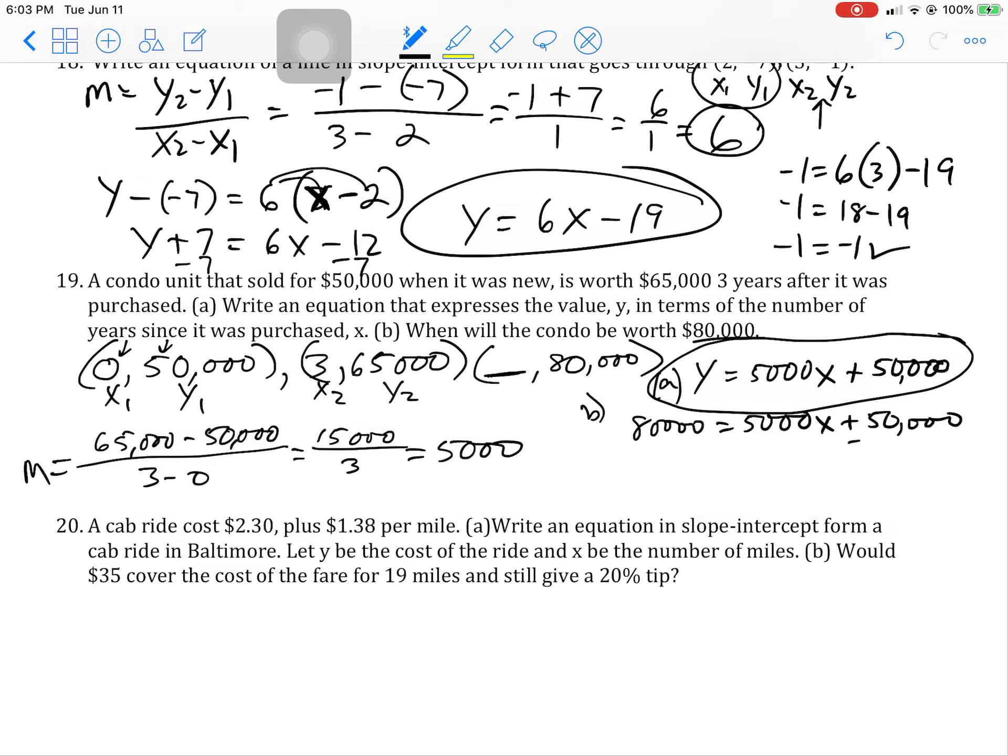So to solve for X, we want to subtract $50,000 from each side. That's going to give me $30,000 equals $5,000X. Isolate my X. So X is going to equal six. So in six years, or six years past its purchase, the condo will be worth $80,000.